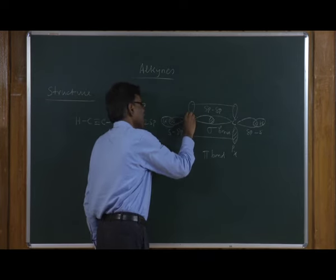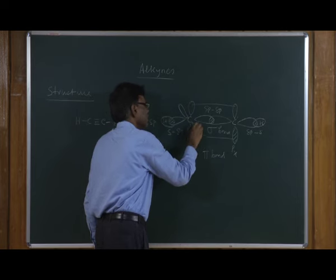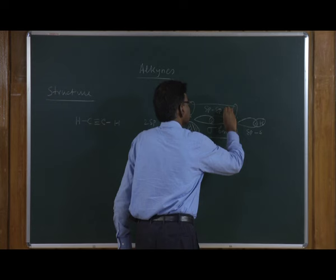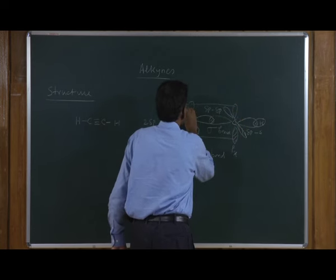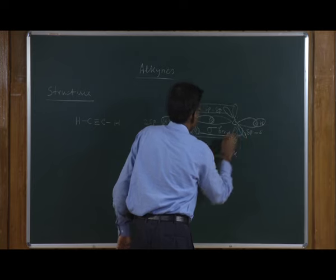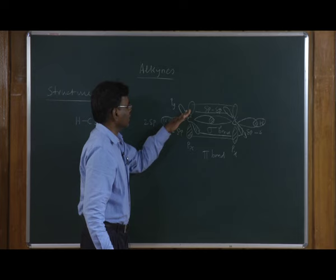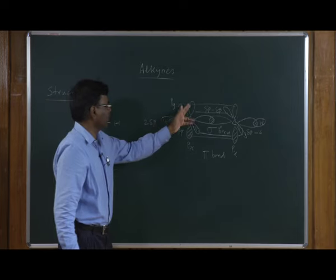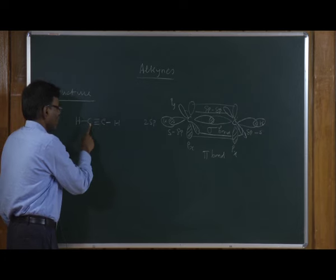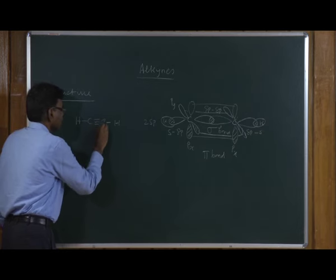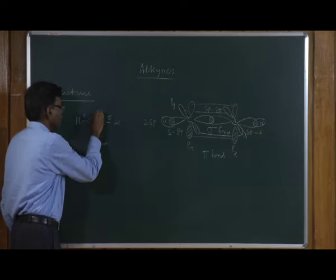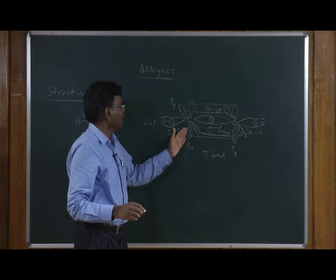There is one more unhybridized p orbital perpendicular to the first. This carbon-carbon and carbon-hydrogen sigma bond framework is linear. Perpendicular to that, the p orbitals overlap to make a pi bond, and another p orbital perpendicular to that makes a second pi bond. So the molecule has three sigma bonds — one carbon-carbon and two carbon-hydrogen — plus two pi bonds formed by the overlapping of the unhybridized p orbitals.